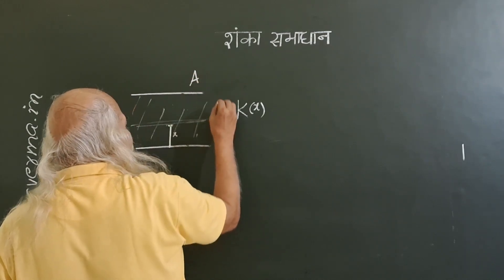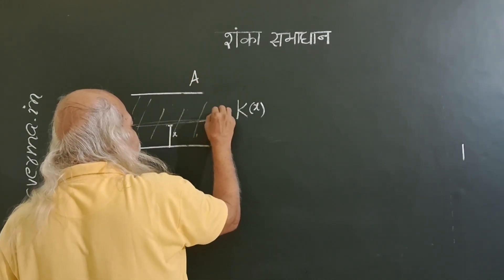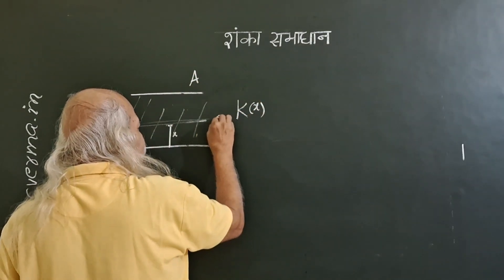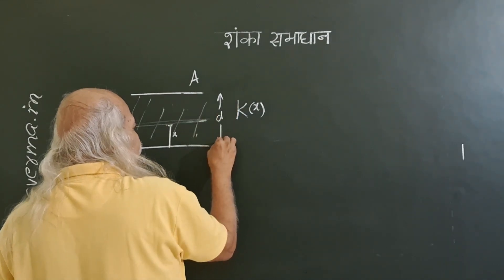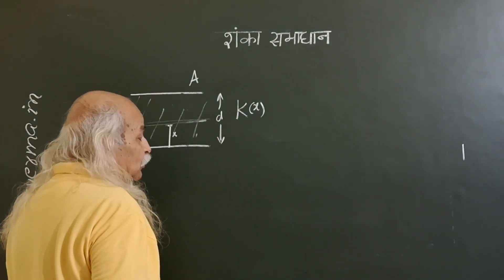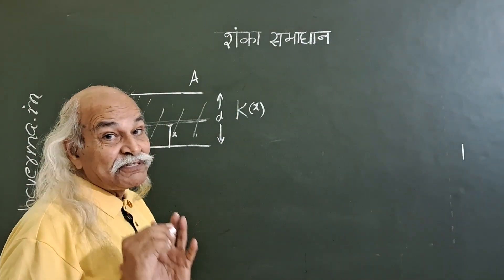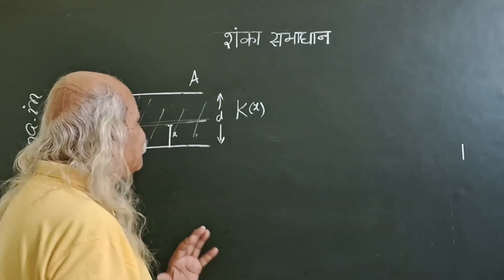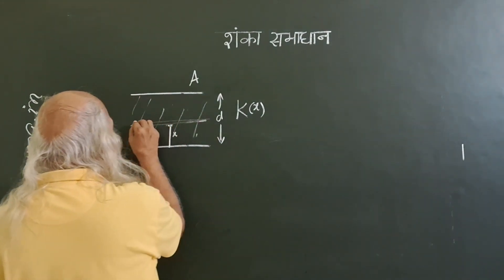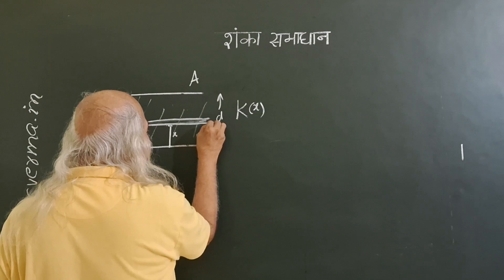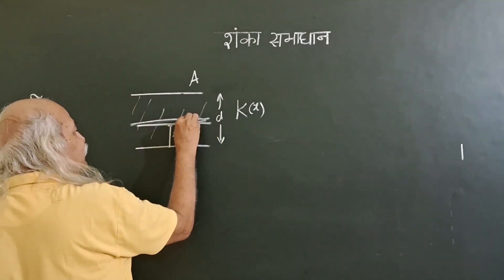And then you have to find the capacitance of this whole thing. Area is A and the total distance may be given. This total distance is d and so on. The physics of solution is that if you divide this in small small parts,